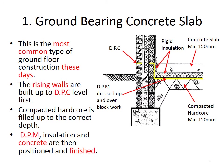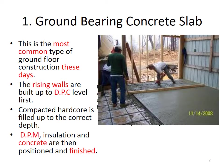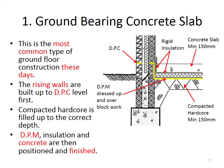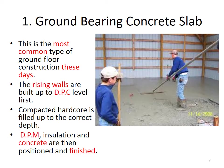On top of the DPM we have rigid insulation, and then concrete is positioned on top of that. The minimum thickness of the concrete slab has to be 150 millimeters. The concrete is screeded out using a screeder board that usually spans from the external rising walls, or using a trammel bar set up to the required level. After the concrete is put in, it has to be finished — usually polished off using a float, either a hand float or a power float.